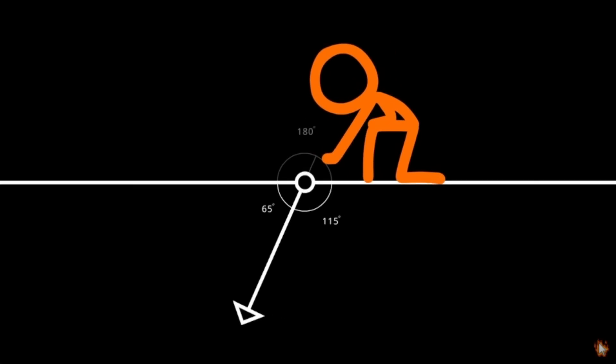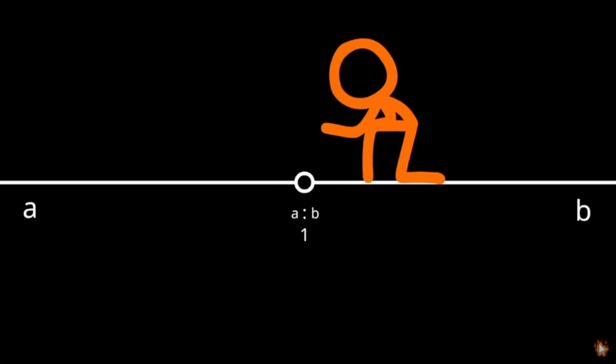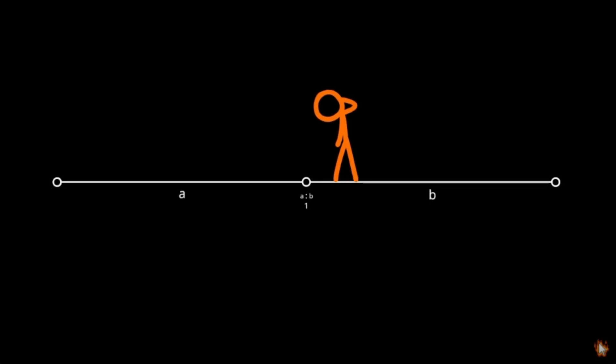90 degrees, 90 degrees, equals 180 degrees. Yes. I remember this one. A and B. Oh, ratio.